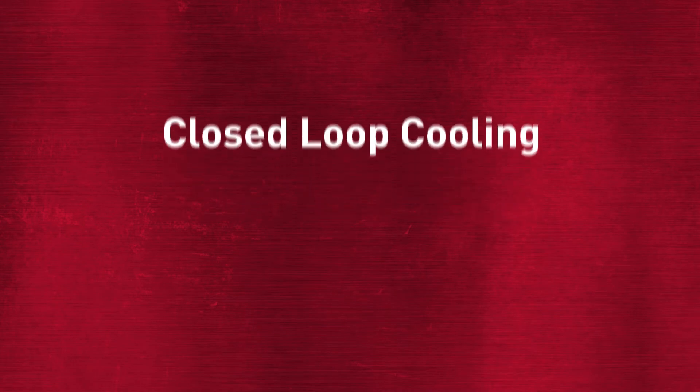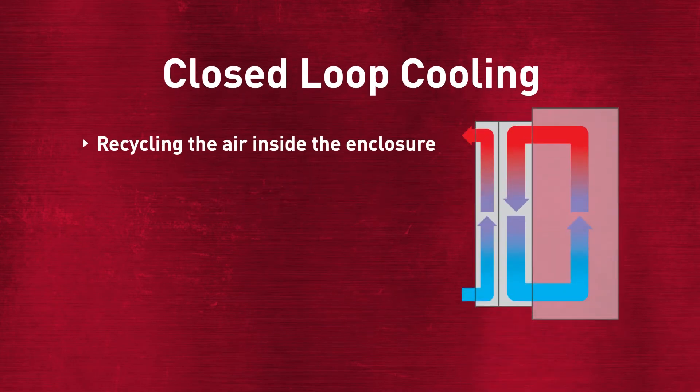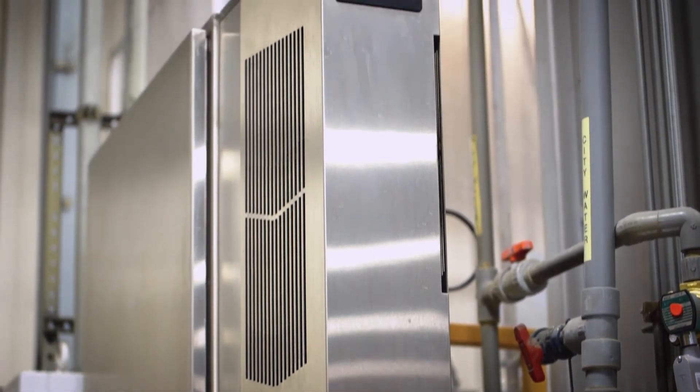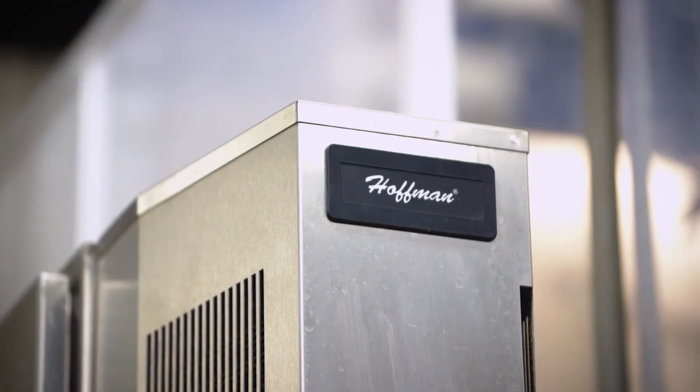In a closed-loop situation, you are recycling the air inside the enclosure. By recycling the air inside the enclosure, that means you're not introducing moist outside air, protecting your equipment from dangerous contaminants and dust. Closed-loop cooling doesn't have to be an air conditioner — it can be a heat exchanger as well. The big thing about closed-loop cooling is maintaining the integrity of the air inside the enclosure.